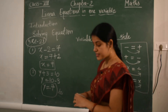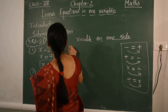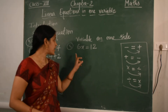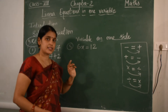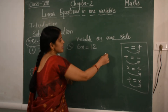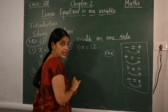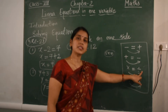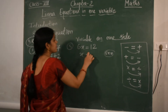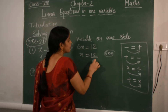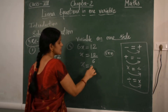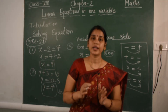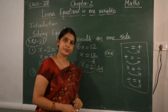Next — the fifth one: 6x equals 12. Here 6 and x have a multiplication sign. When we transpose 6 to the other side, multiplication becomes division. So x equals 12 divided by 6, which is 2. In this way, multiplication transposes into division.